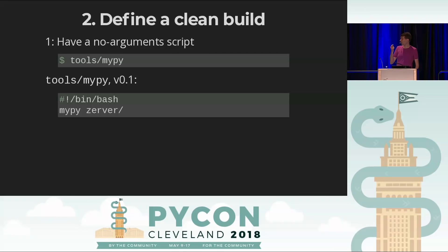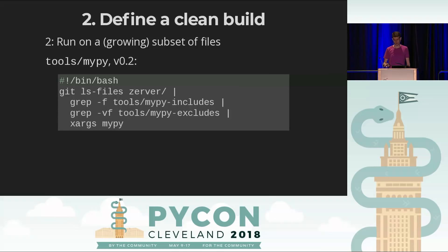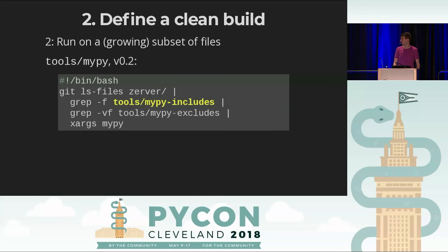You should have in your repo a script that takes no required arguments and does everything you need. A v0.1 might just be MyPy on a directory containing all your code. You'll rapidly want to move to a v0.2 — running on a subset of files. In that version, you look at all the files in your repo, have a list to include or exclude, and pass that list to MyPy.